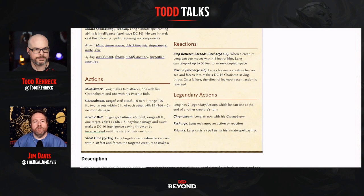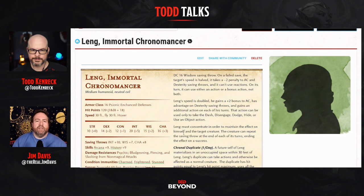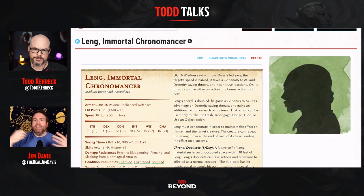Steal Time is a once-per-day power — if I were remaking this I'd say once per long rest to bring it in line with fifth edition's reset timers. Lang targets one creature he can see within 30 feet and forces a DC 16 Wisdom saving throw. The way I had this work: as long as Lang maintains concentration, the target is Slowed and Lang is Hasted — representing stealing some of that creature's time.